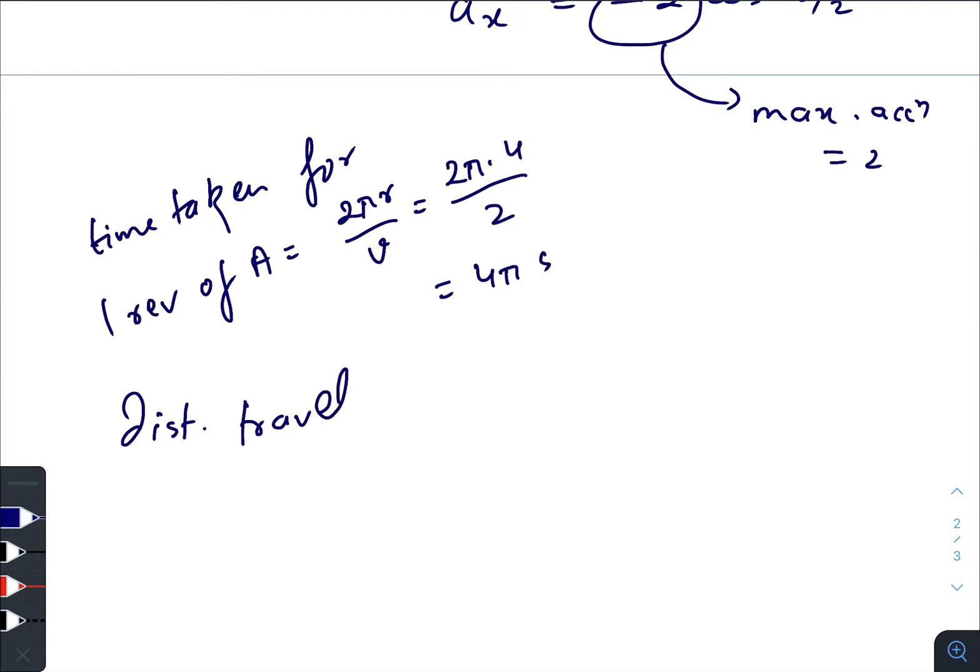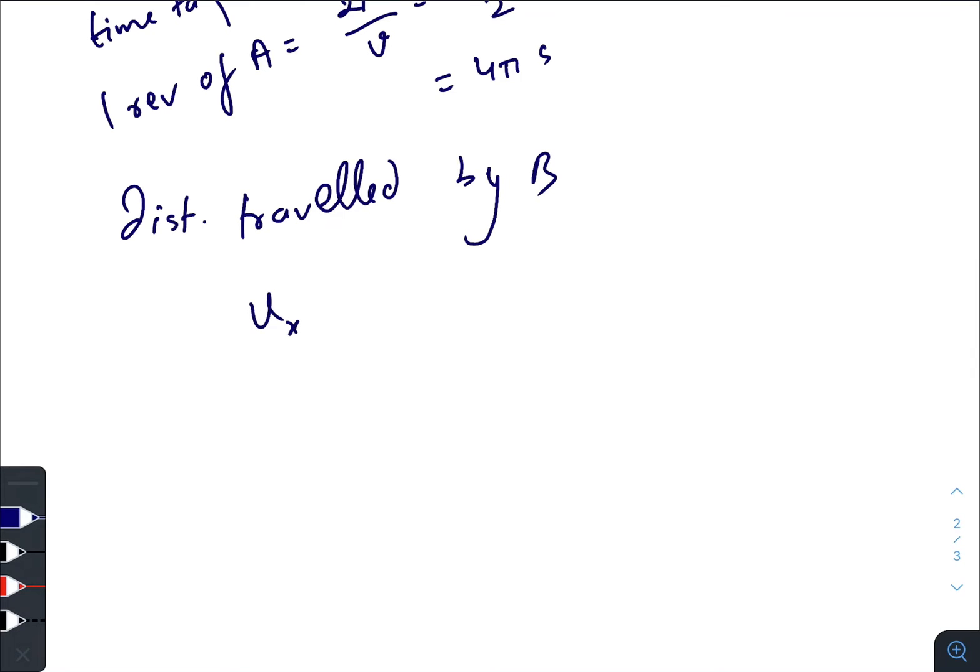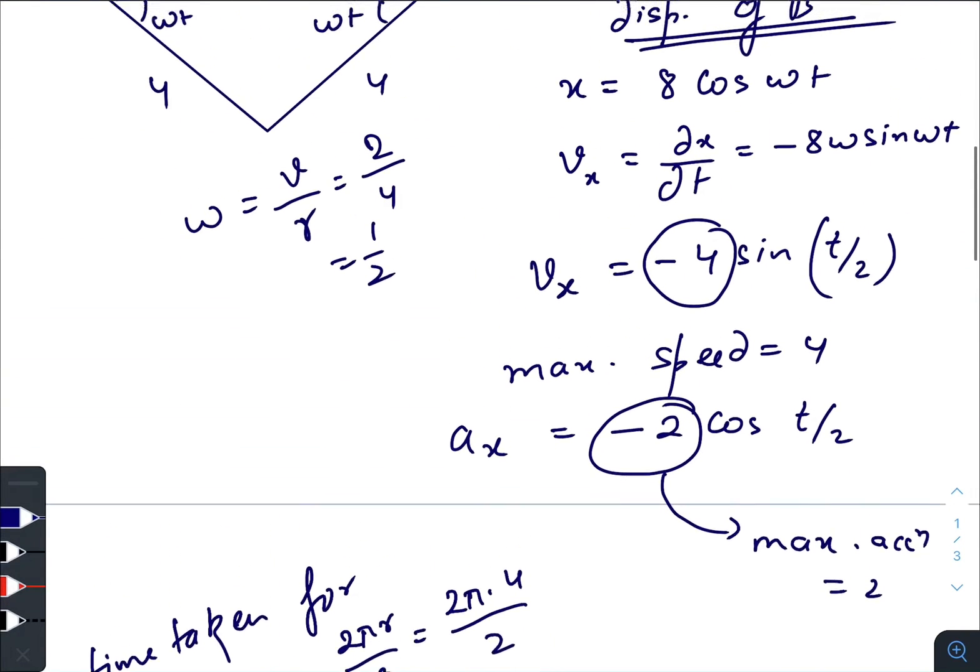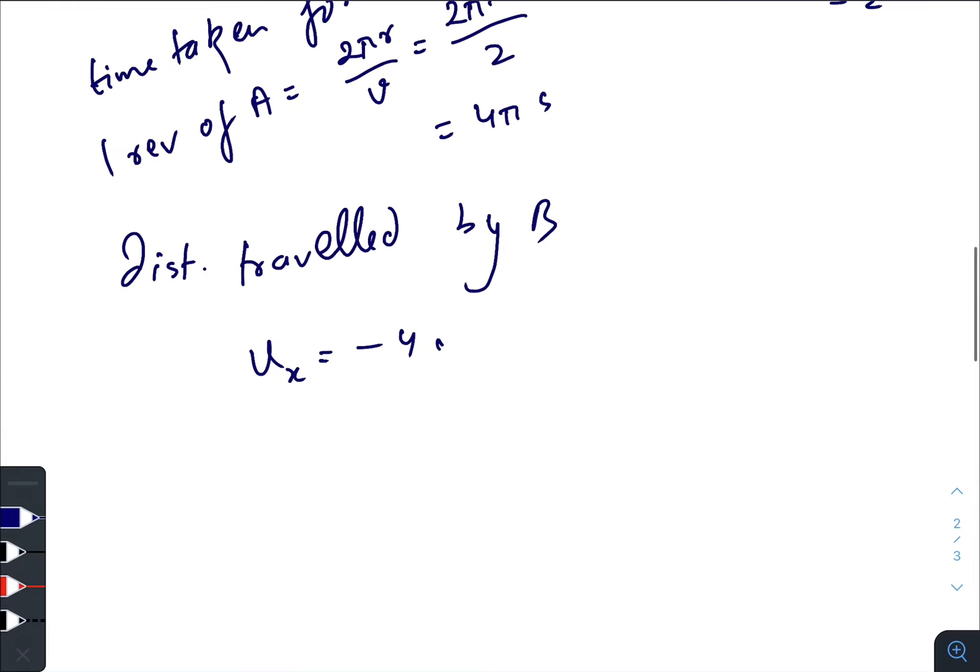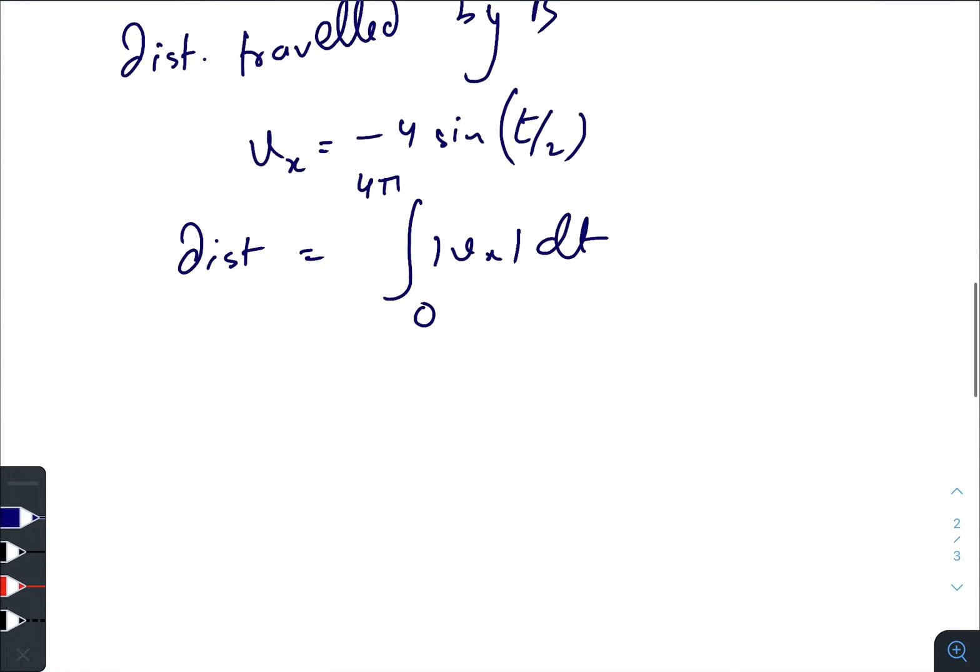Velocity we know: velocity of B is -4 sin(t/2). And for distance, the required formula is ∫|vₓ|dt from 0 to 4π. So it becomes ∫4|sin(t/2)|dt from 0 to 4π.